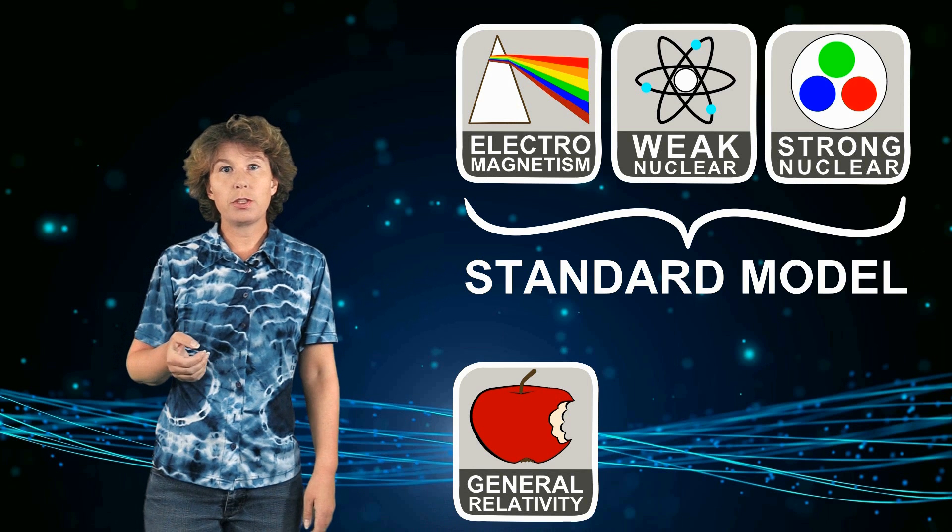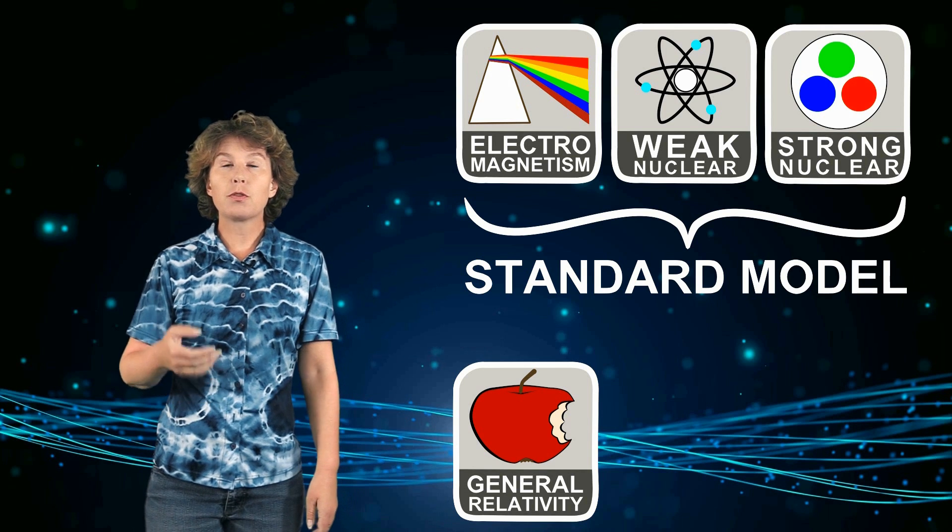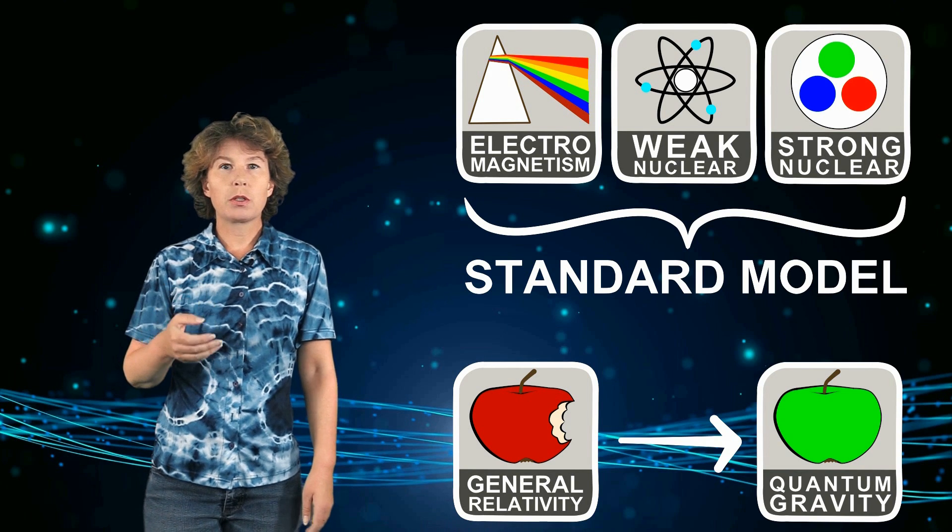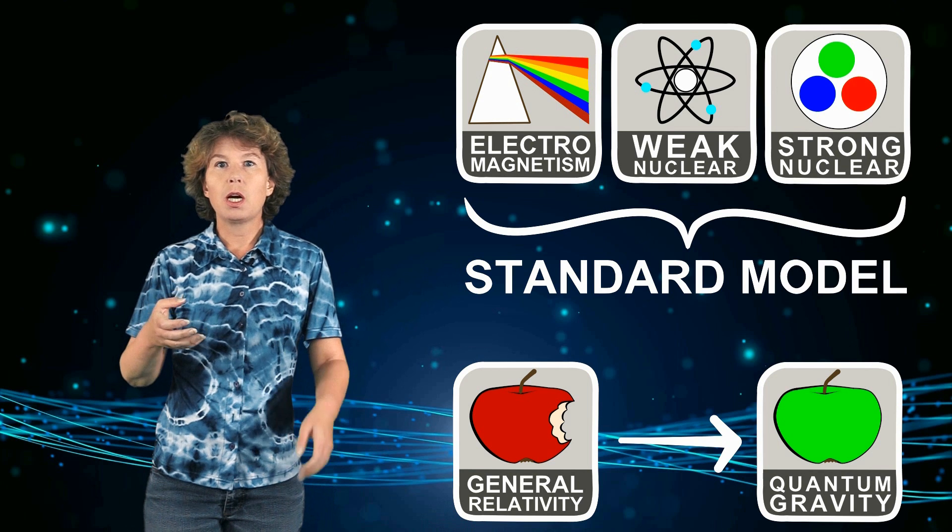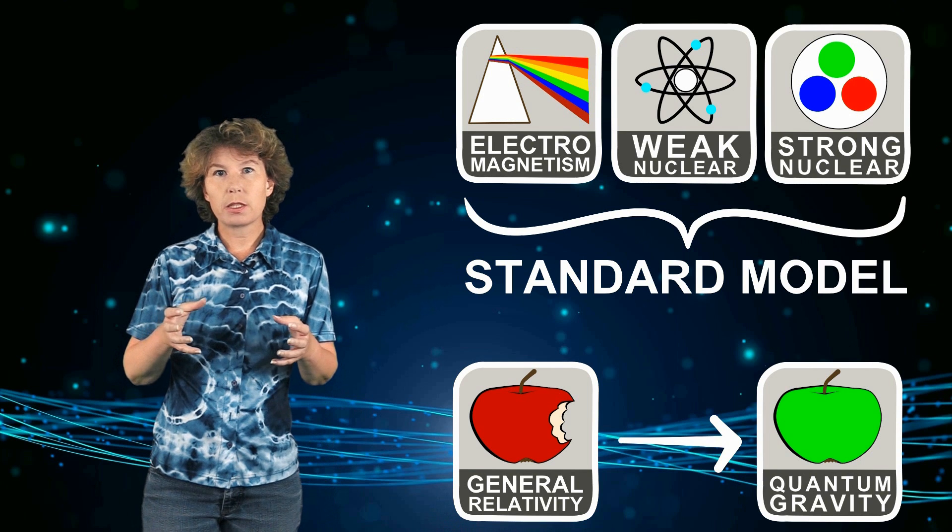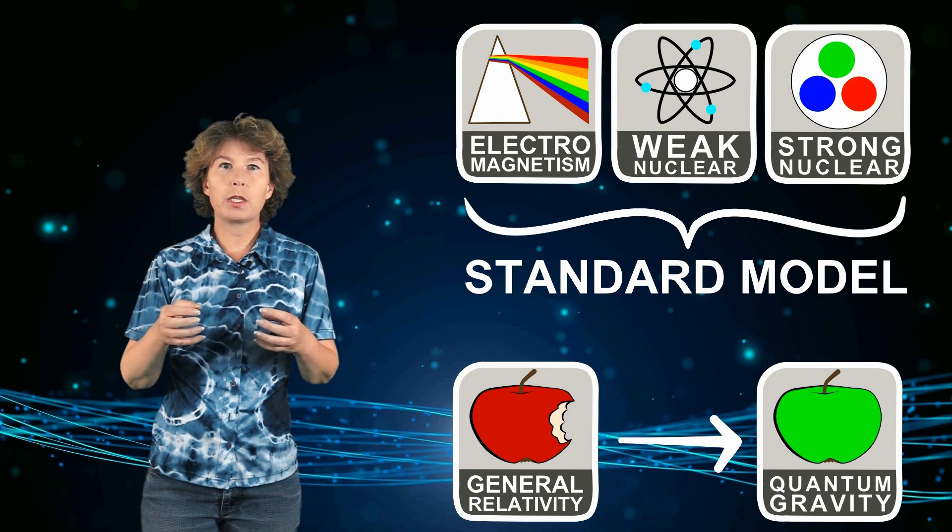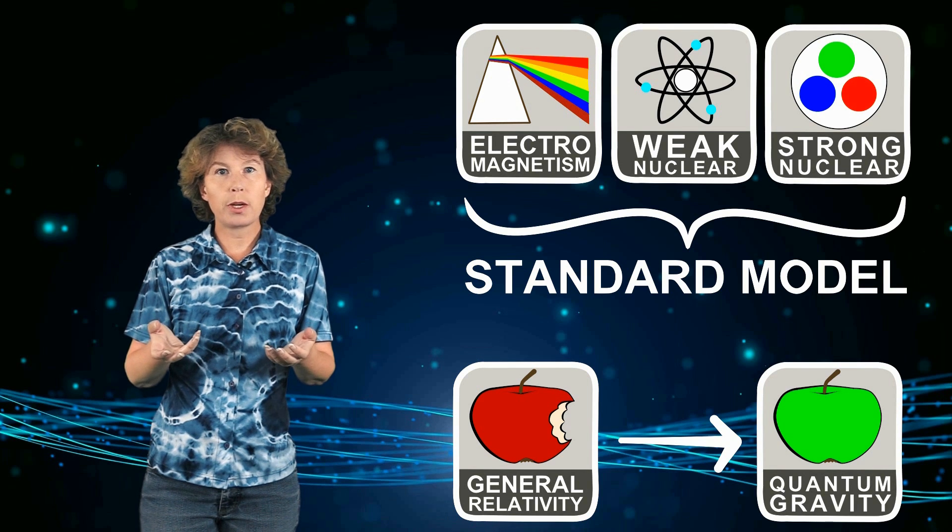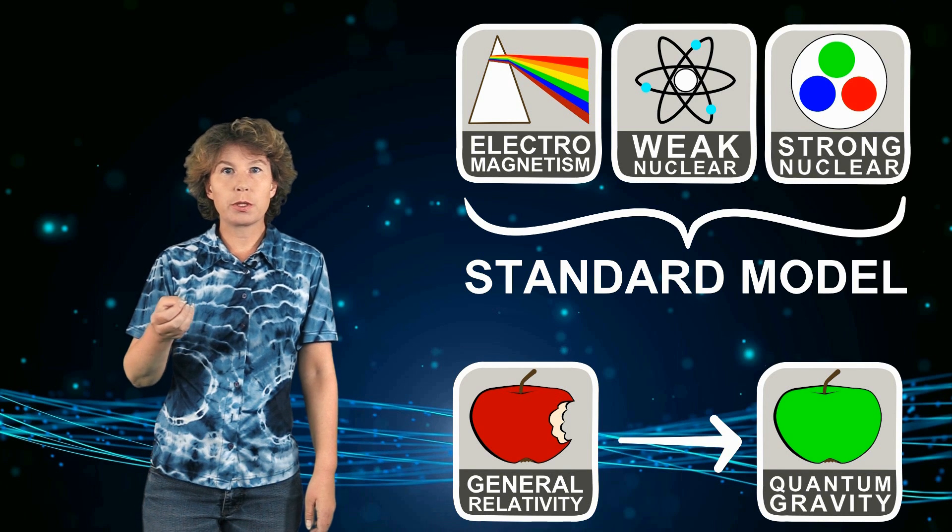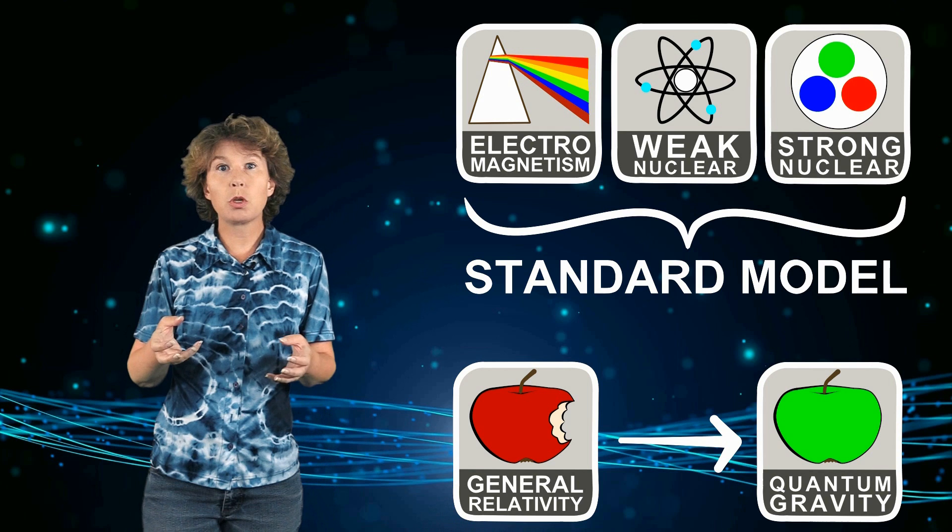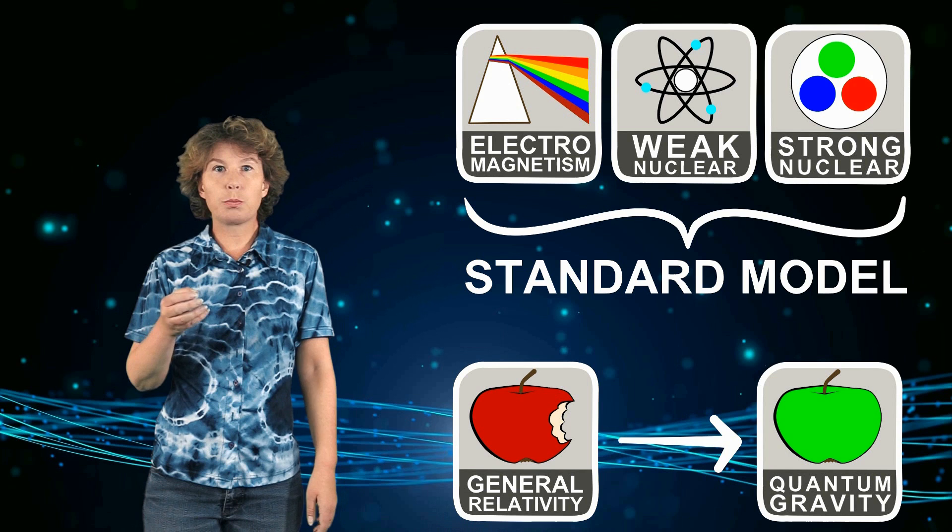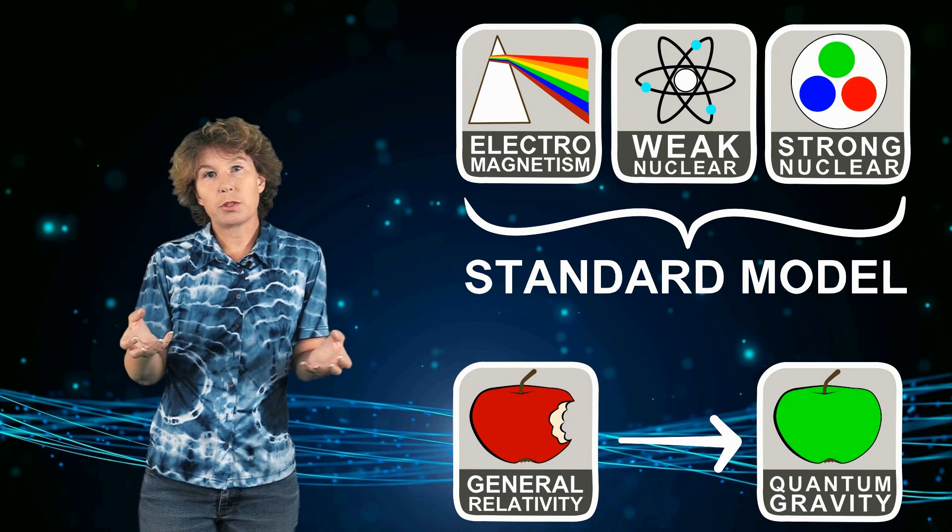For this, we would need a theory for the quantum behavior of gravity, a theory of quantum gravity as it's called. We need a theory of quantum gravity because general relativity and the standard model are mathematically incompatible. So far, this is a purely theoretical problem because with the experiments that we can currently do, we do not need to use quantum gravity. In all presently possible experiments, we either measure quantum effects, but then the particle masses are so small that we cannot measure the gravitational pull, or we can observe the gravitational pull of some objects, but then they do not have quantum behavior.